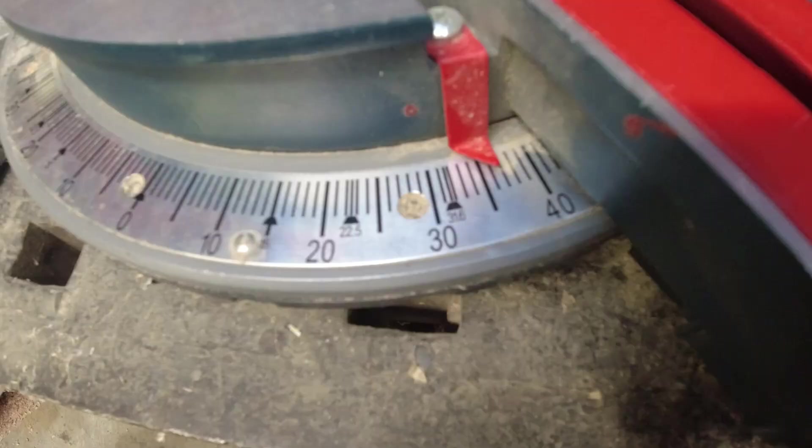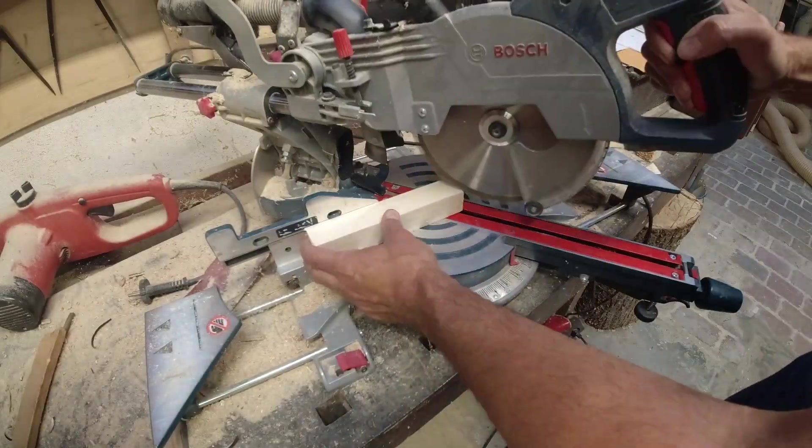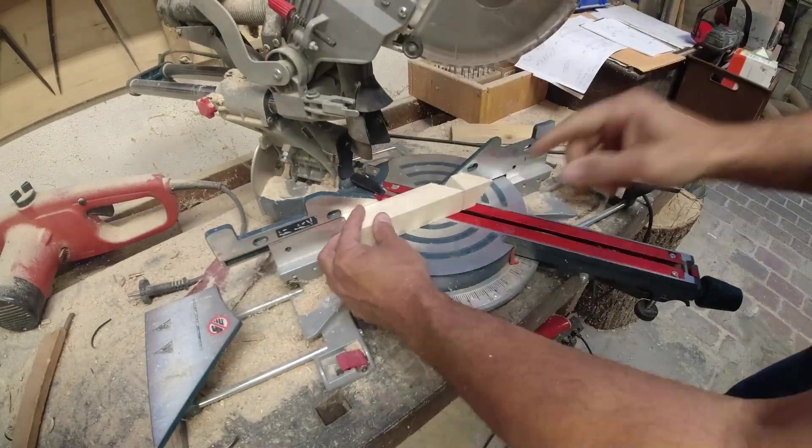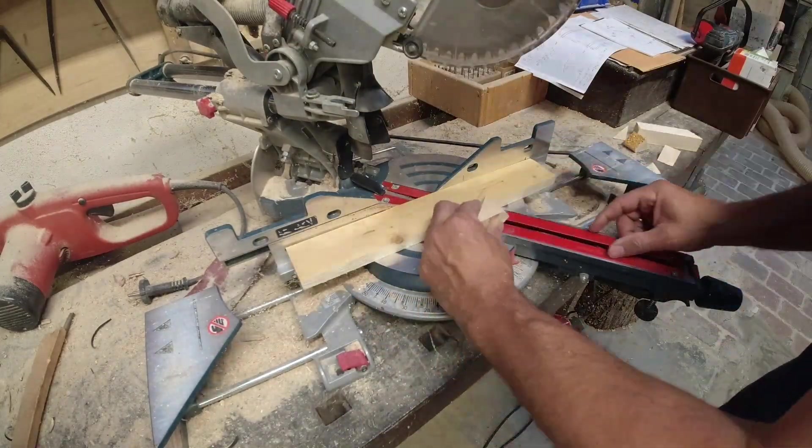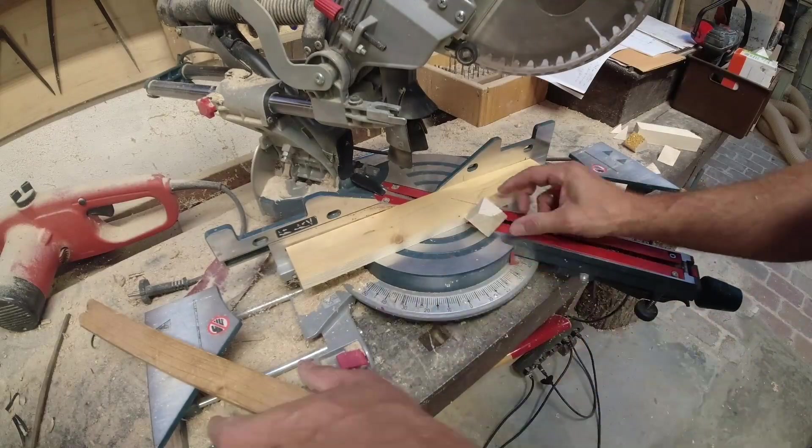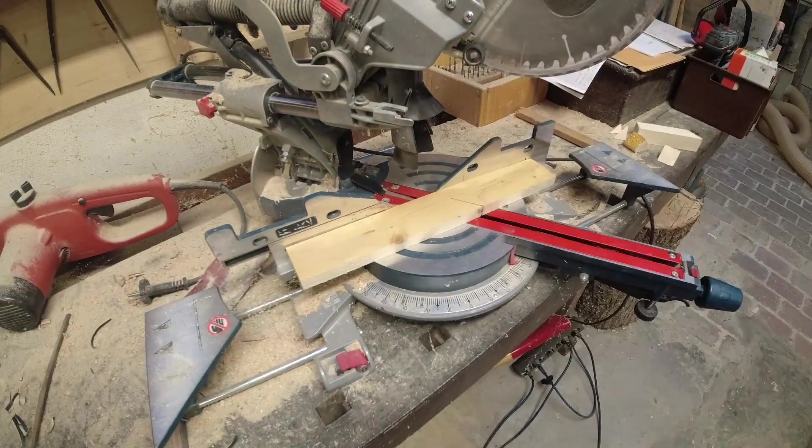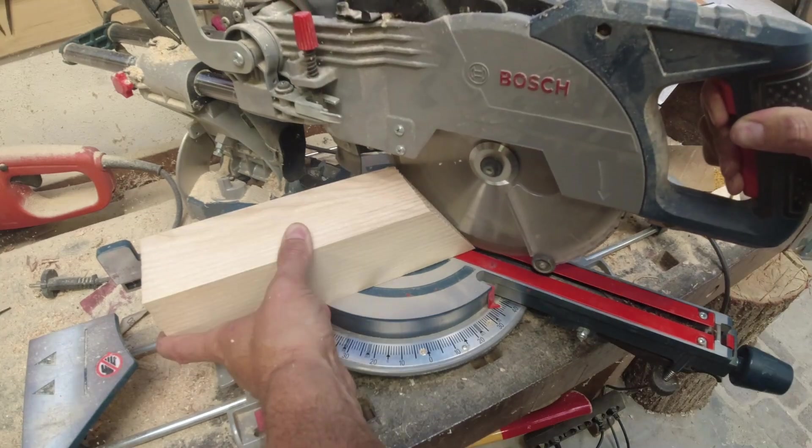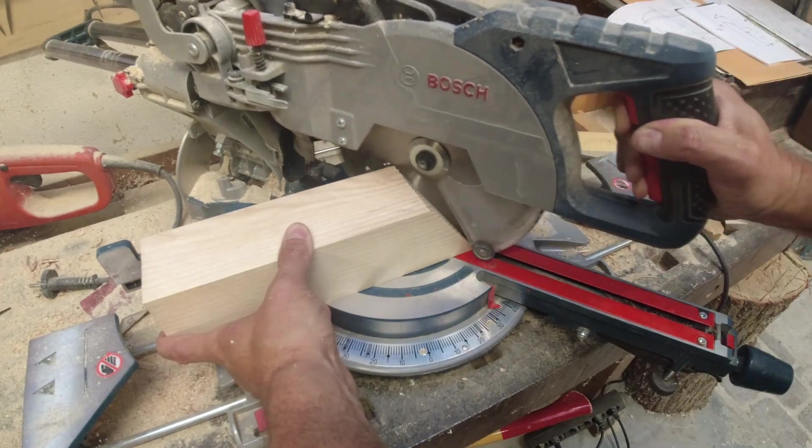A mitre saw is all you need here. I first tried to make a small prototype to see how I have to turn the workpiece properly. It went quite well, so I took a bigger block of ash. First cut, then turn it 90 degrees. Second cut right on the corner.